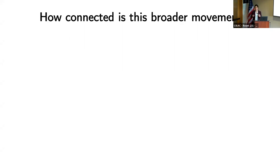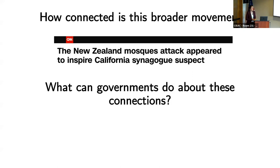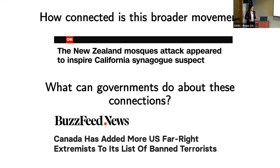The questions we try to answer are: first, how connected is this broader movement? For example, a California synagogue attack was connected to the New Zealand Christchurch attack — we see inspirations and ideas spreading, but are there actually formal ties between different groups and actors? Second, what can governments do about these broader connections? Canada designated various U.S. domestic extremist groups as terrorist organizations, including the Proud Boys — but do conventional counterterrorism techniques developed for Islamist threats actually undermine the far right threat?